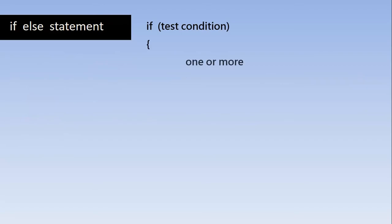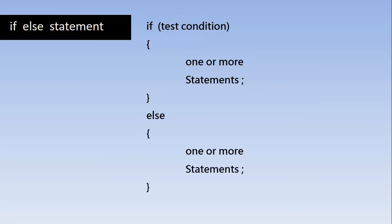Now we will study the general structure of the if-else statement. We start with the if-statement and a block of code that will be executed if the test condition is true. Then we put the keyword else followed by a block of code that executes when the test condition is false. Either of these blocks will definitely be executed depending upon the truth value of the test condition.